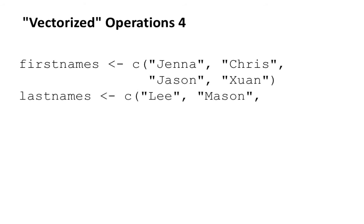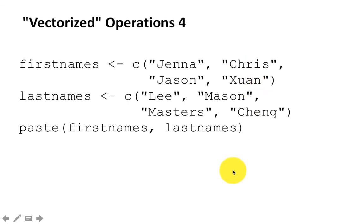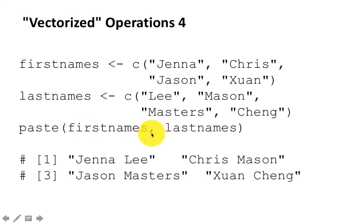Vectorized operations work not only on numbers but also on strings. Here I have two vectors — first_names and last_names — and I combine them using the paste() function. Even though we're passing vectors of strings, paste still does the same operation pairwise. The result is: 'Jenna Lee', 'Chris Mason', 'Jason Masters', 'Zuan Sheng'. By default a space is used as separator since we didn't specify one.